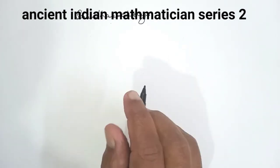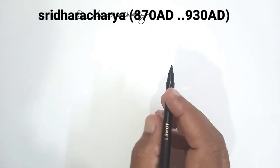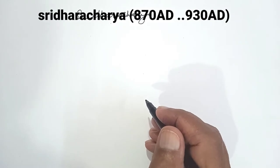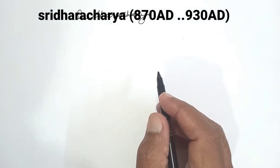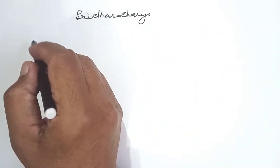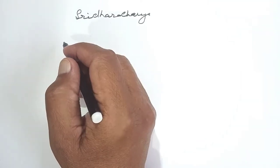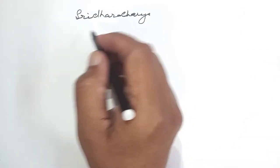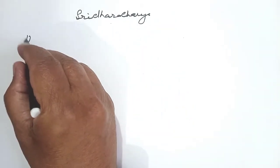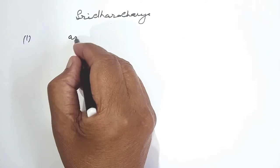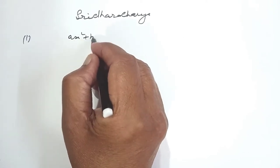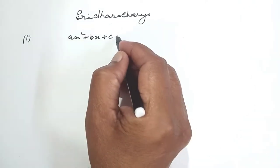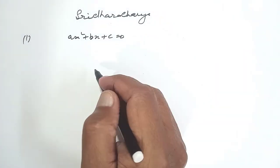We are now going to discuss the contribution of the great ancient mathematician, Shri Dharacharya. In fact, he gave us a formula to solve a quadratic equation. For example, ax² + bx + c = 0 is a quadratic equation.